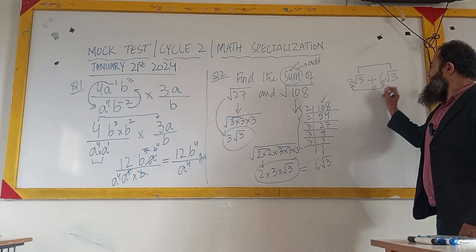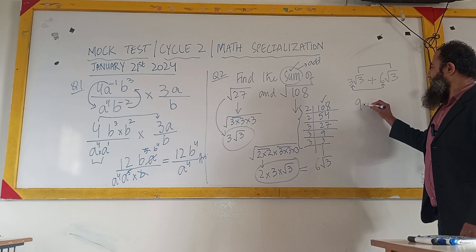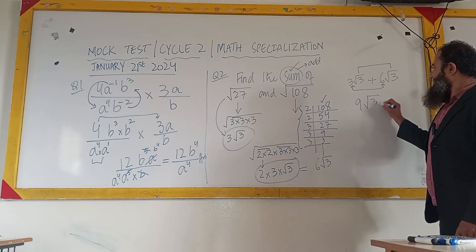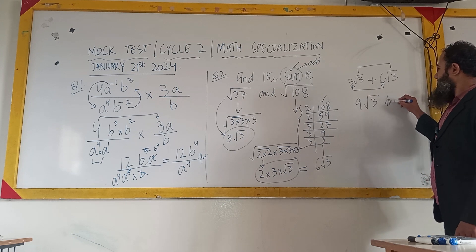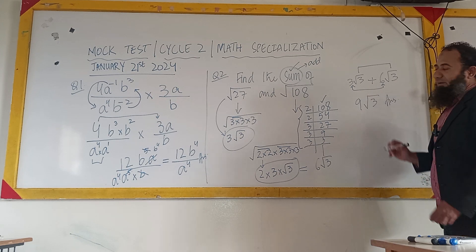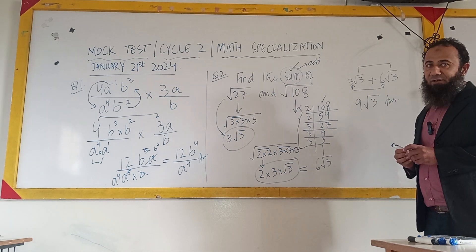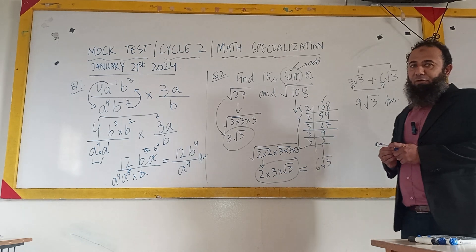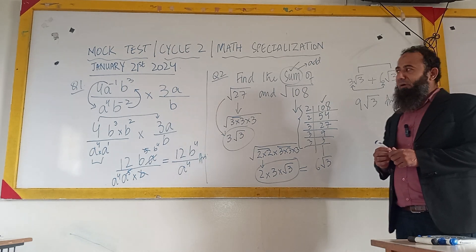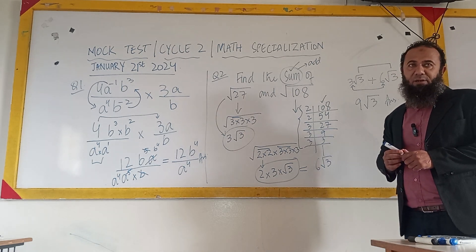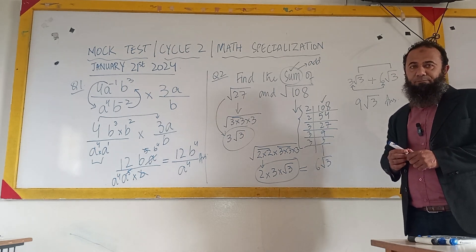3 plus 6 is 9, so our final answer is 9√3. Now I am going to solve question number 3.